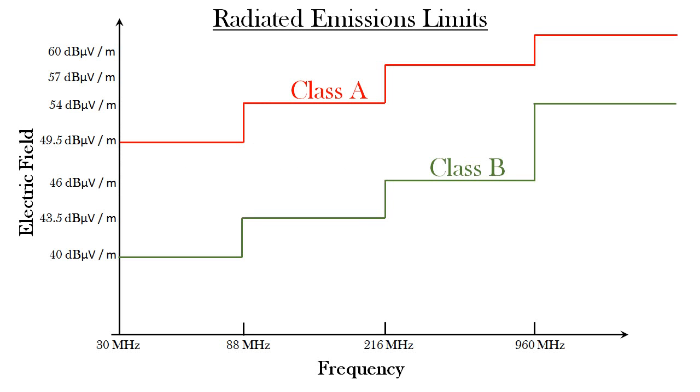Similar to the conducted emissions I've shown them on the graph in front of you for ease of comparison. The class A limits are shown in red on the top, and the class B in green on the bottom. You can again see how the class B limits are more strict.